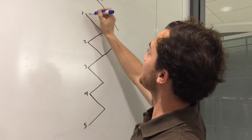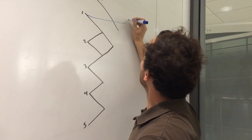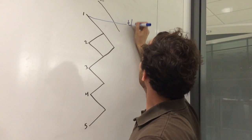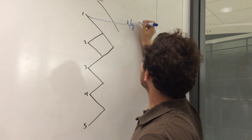So, first coming from C1 is the thyrohyoid.